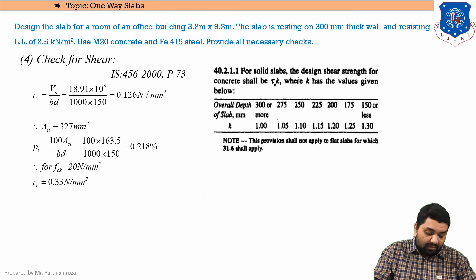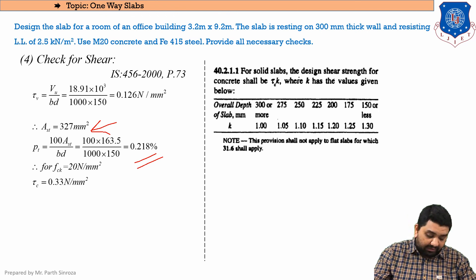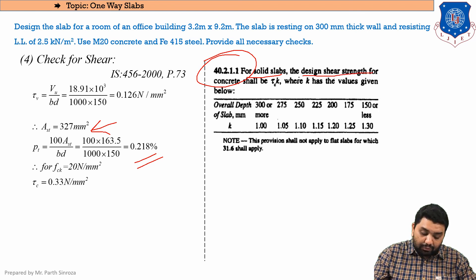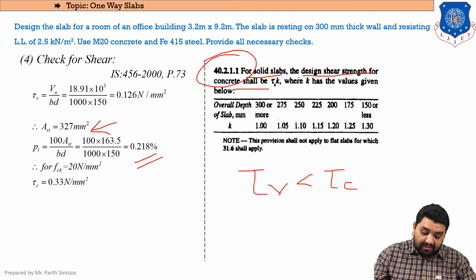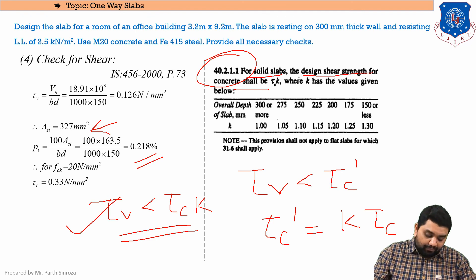Next we find τc. For that, we need pt = 100 × Ast / (b × d) = 0.218%. For solid slabs, as per IS 456 clause 40.2.1.1, the design shear strength is τc × k (called τc'). We always check that τv ≤ τc' = k × τc.